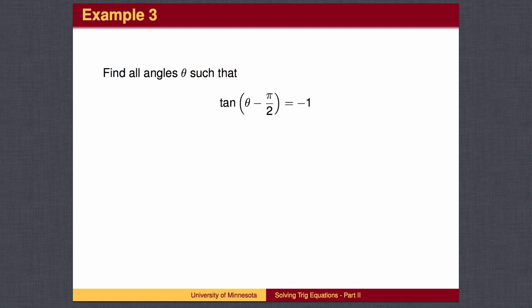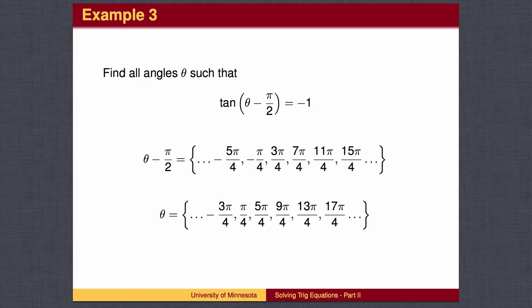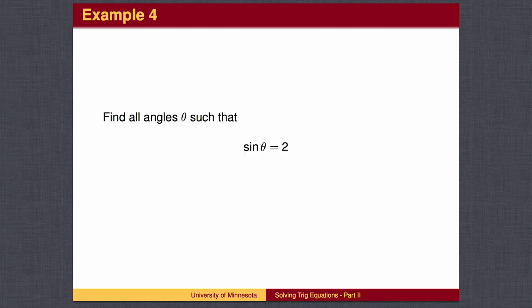Here's an example where the angle is shifted. We can make a list of angles whose tangent is negative 1, then add pi over 2, which is 2 pi over 4, to each answer.